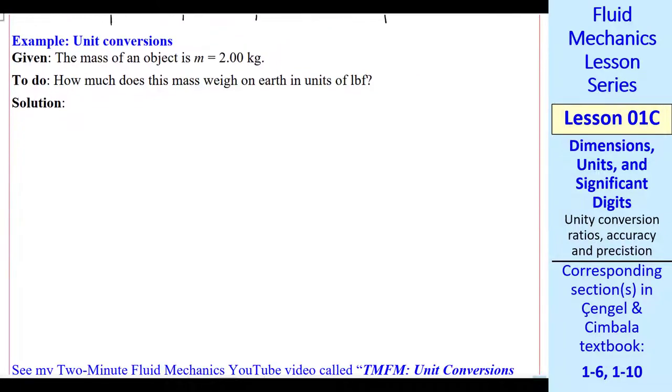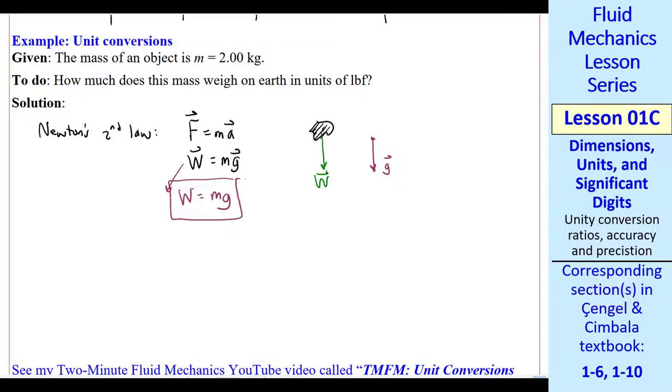Here's an example. Suppose the mass of an object is 2.00 kilograms. How much does this mass weigh on Earth in units of pound force? We simply apply Newton's second law, f equals ma, in this case weight equals mg. Since weight and gravitational acceleration are in the same direction, we can write the scalar form in that direction, w equals mg.